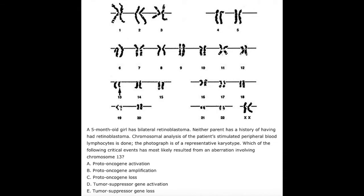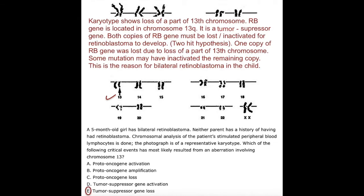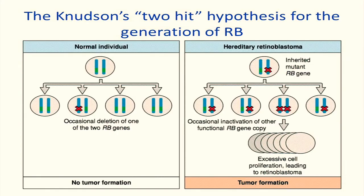The correct answer is tumor suppressor gene loss. The karyotype shows loss of a part of the 13th chromosome. The RB gene is located in chromosome 13q — it is a tumor suppressor gene. Both copies of the RB gene must be lost or inactivated for retinoblastoma to develop — this is the two-hit hypothesis.